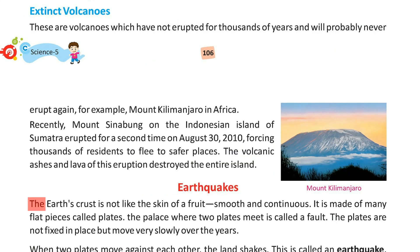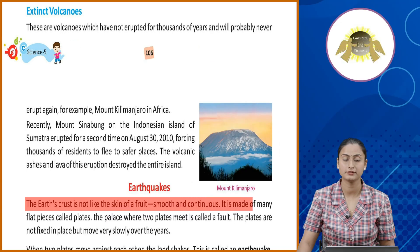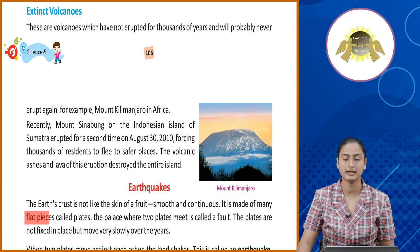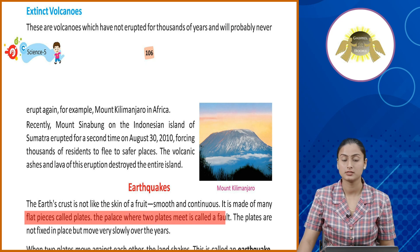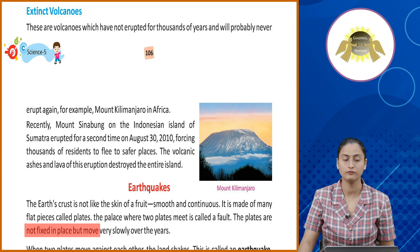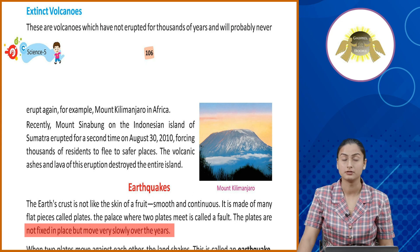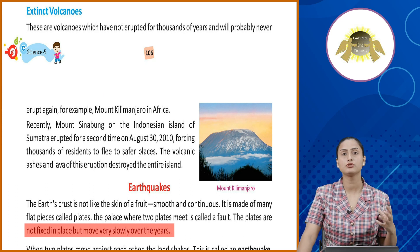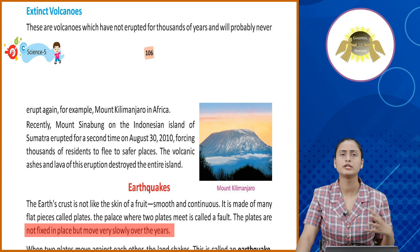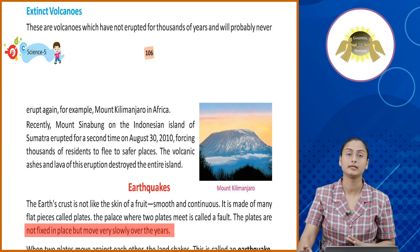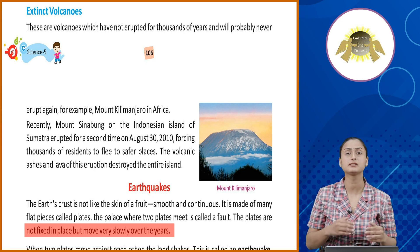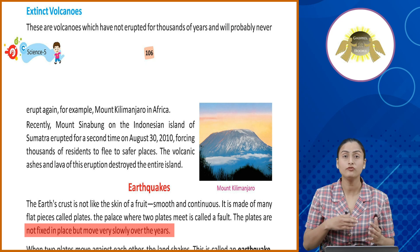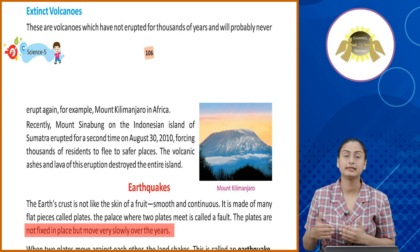Earthquakes. The earth's crust is not smooth and continuous like the skin of a fruit. It is made of many flat pieces called plates. The place where two plates meet is called a fault. The plates are not fixed in place but move very slowly over the years. Earth ki jo crust hoti hai woh bohot saari chhoti badi plates se milkar bani hai, aur ye plates thousands of years tak move karti rehti hai continuously.